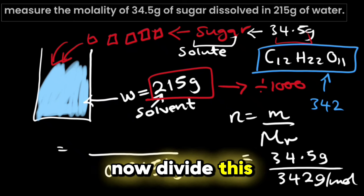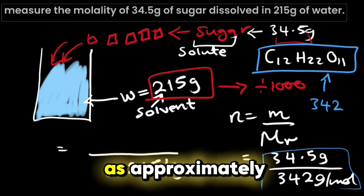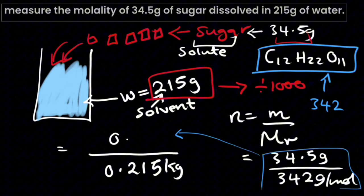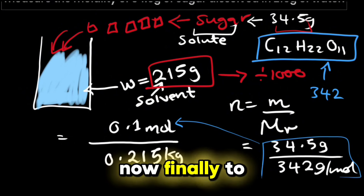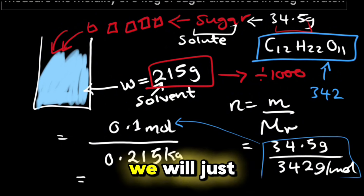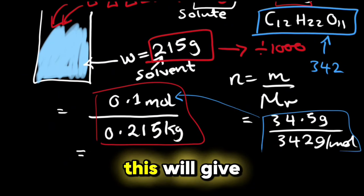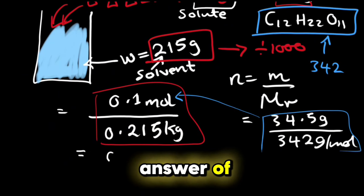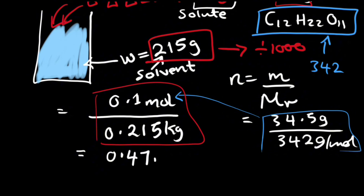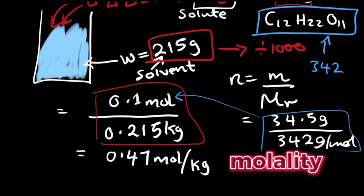Now divide this you will get your number of moles as approximately 0.1. Now finally to get the molality we will just divide the two, the number of moles and the kilograms of the solvent. This will give you a final answer of 0.47 mol per kilogram as the molality.